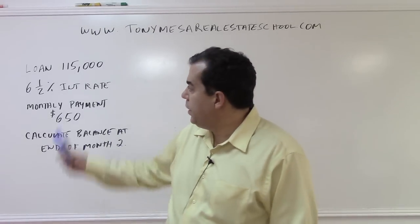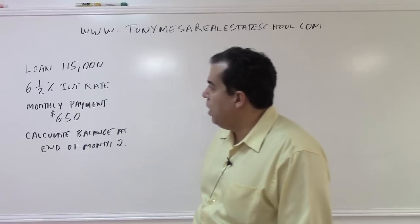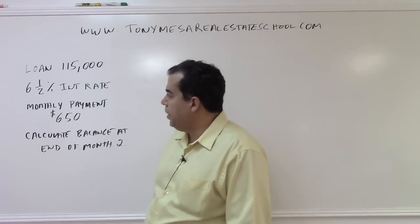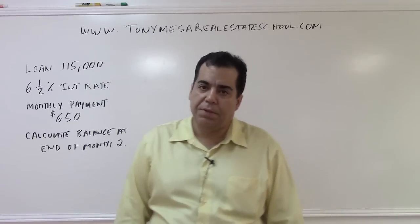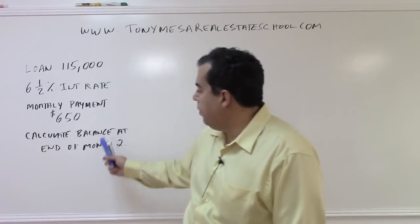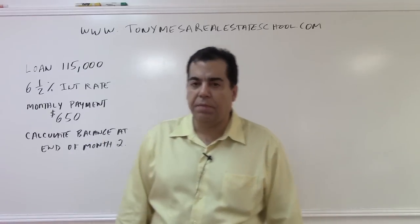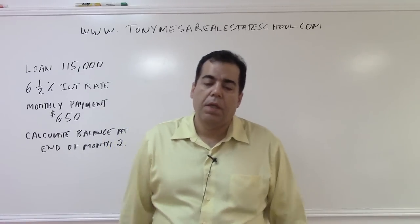They tell you that you have a $115,000 loan at a six and a half percent interest rate with a monthly payment of $650, and they're asking you to calculate the balance at the end of month two.